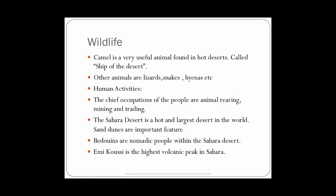Human population is very thin due to the extreme and harsh temperature. Their main occupations are animal rearing, mining, and trading. They cultivate a few crops like wheat, maize, millet, cotton, etc.